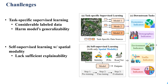There are two conventional ways to do that. The first one is task-specific supervised learning, but it needs considerable labeled data which may harm the model's generalizability. The other way is self-supervised learning with spatial modality only, including mobility, point of interest, road network, etc. However, such paradigms still lack sufficient explainability.